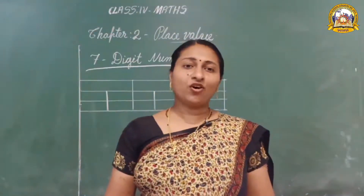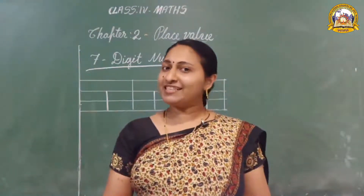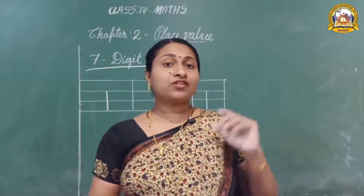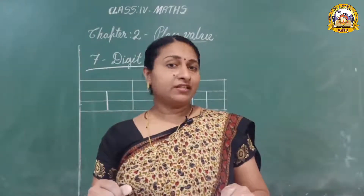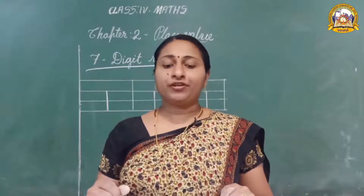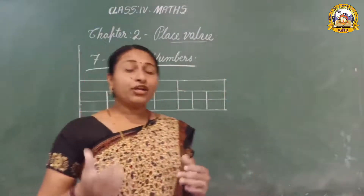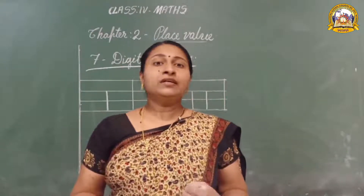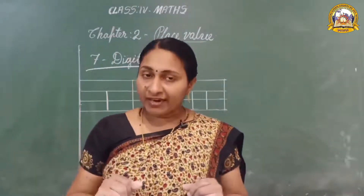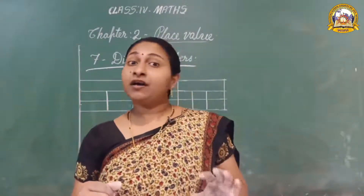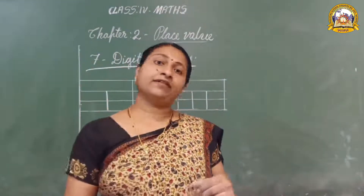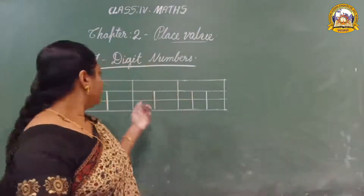Good morning children. You have already learned up to six-digit numbers. Next, we have to do work on the seven-digit numbers. We have to learn about seven-digit numbers. Did you do Exercise 2.1? Okay, very good. Let us start seven-digit numbers. You have already learned how to make the place value chart, how to find the place value of each digit, how to write the expanded form, and how to separate the periods. The same things apply to seven-digit numbers.